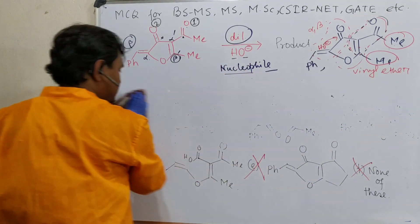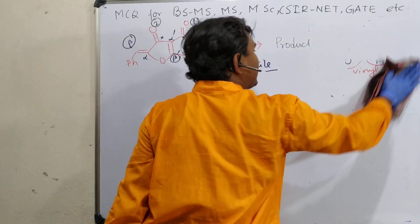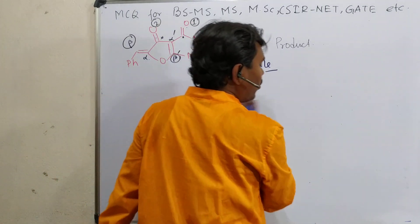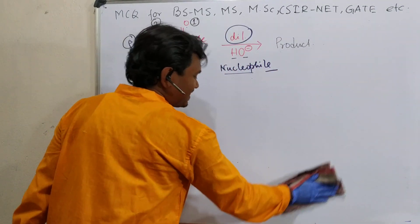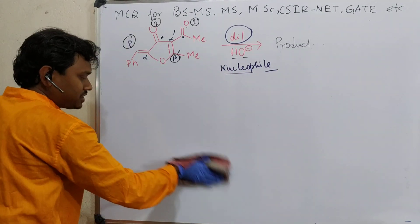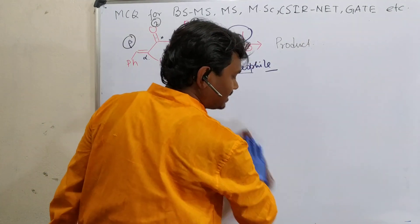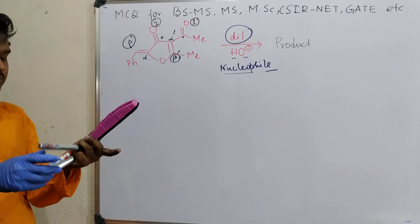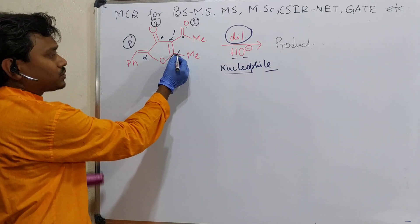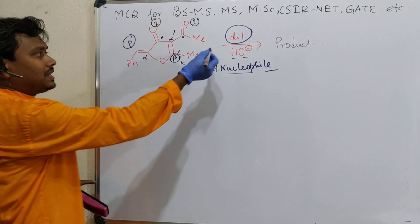Now let's discuss the mechanism clearly. I believe sometimes you should not only know the final product - in parallel with the final product, you should also know something about the other options, because you should know why the other option is not happening. It is essential to know why one thing is happening and why others are not the answer. So, which one is the most electrophilic position? This position here is the most nucleophilic. So the alcohol is expected to attack here.